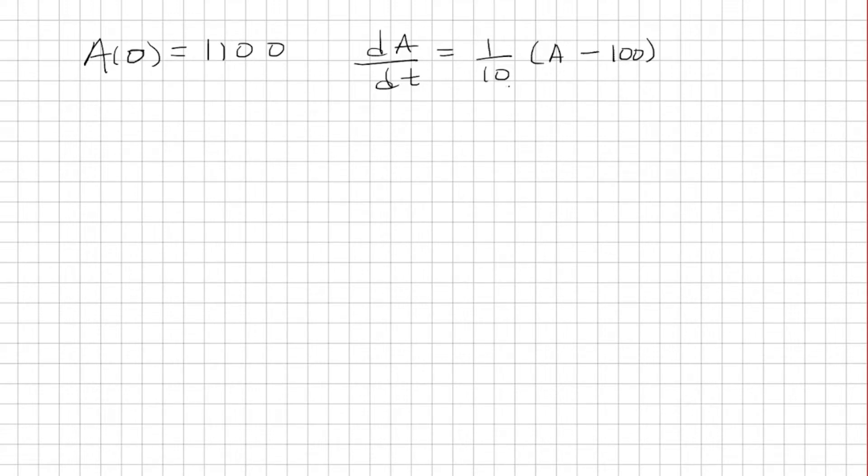We want to use a tangent line to approximate t equals one-fourth. For this, we need a point and a slope if we're looking at tangent lines.